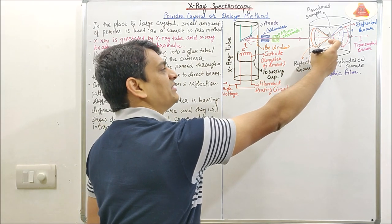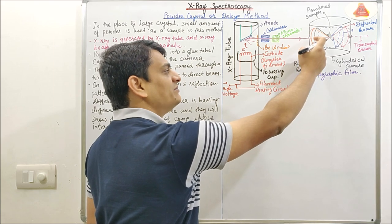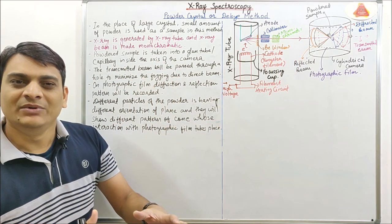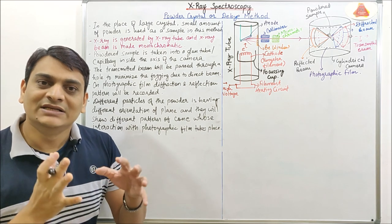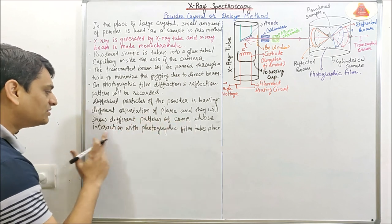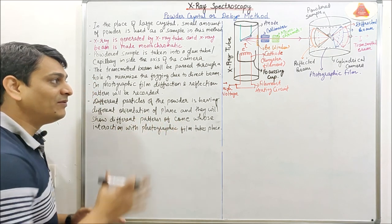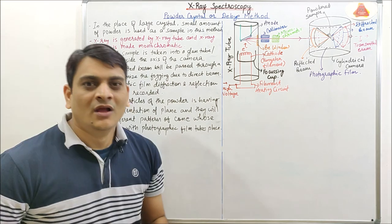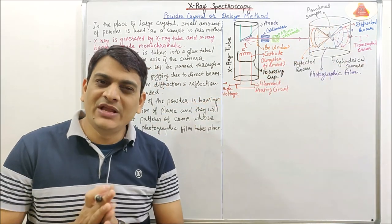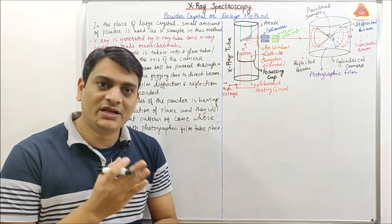Here you can see different patterns of cones according to diffraction and reflection. One cone is represented by blue color, one by red color, one by orange color, and one by black color. Many cones may be present depending on the number of planes. These cones will interact with the photographic film and form a specific pattern.